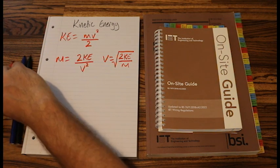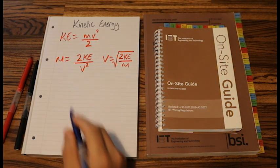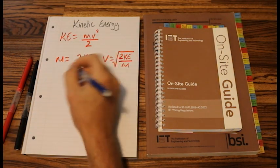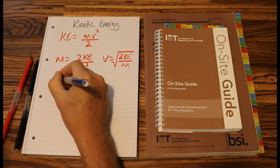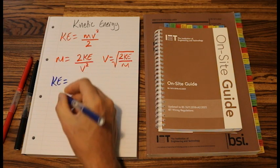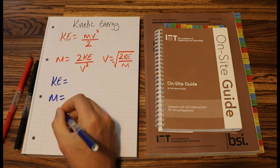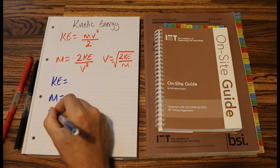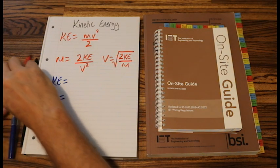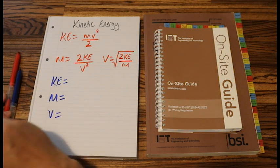And right, let's change our pen color and write down what each of the letters means. So there's only three here. So we've got KE equals, and there's m equals, and lowercase v equals. So I'll grab my black pen.